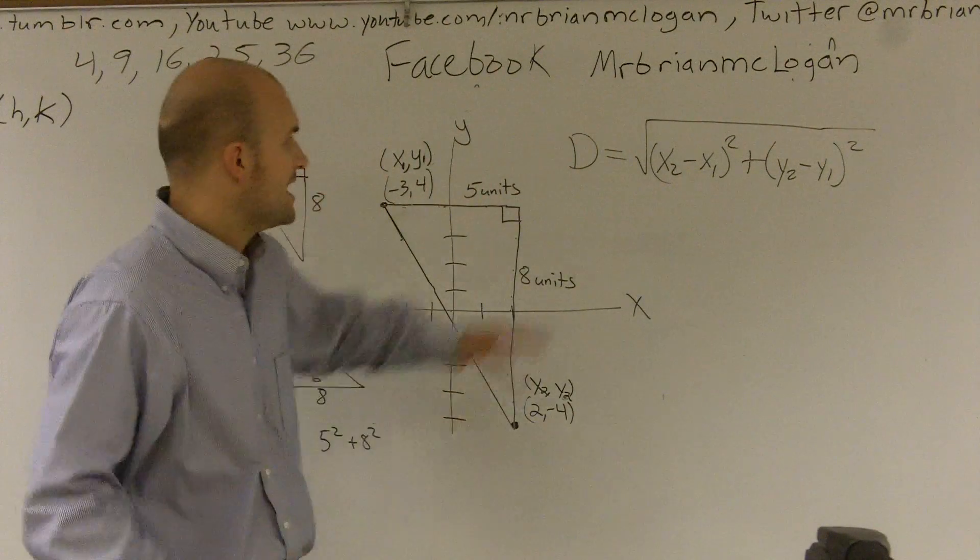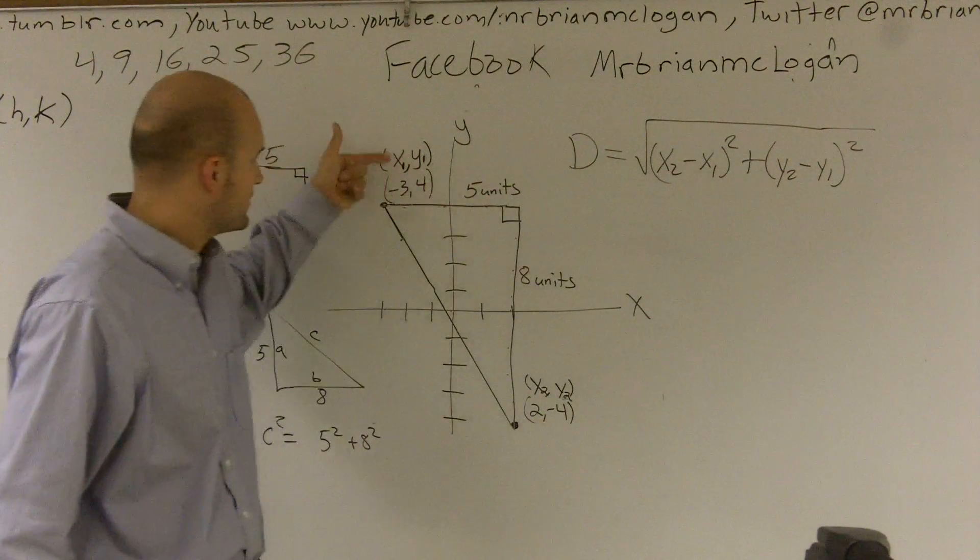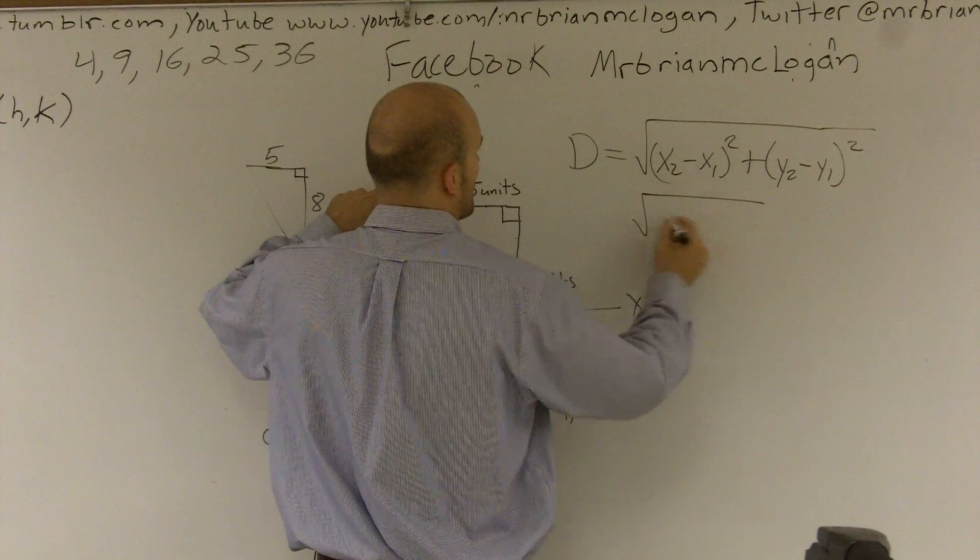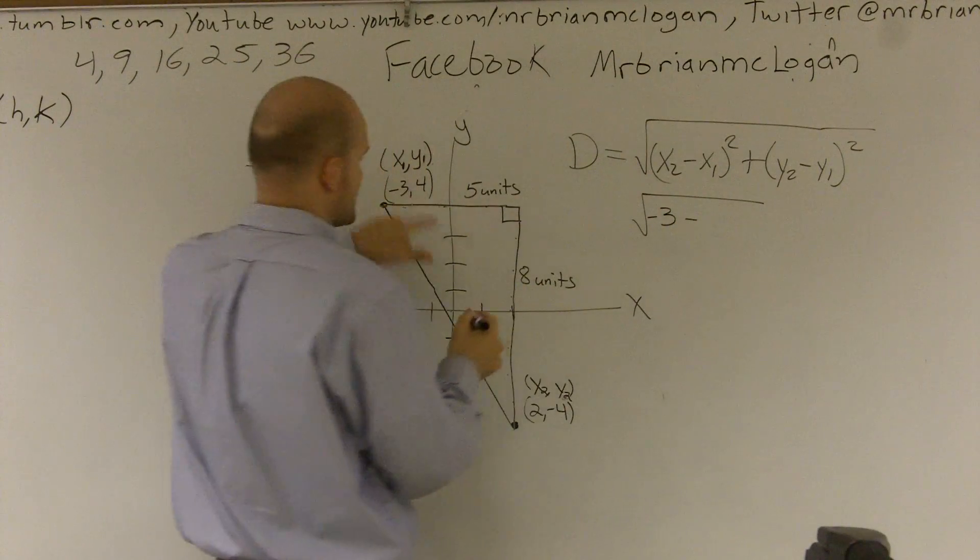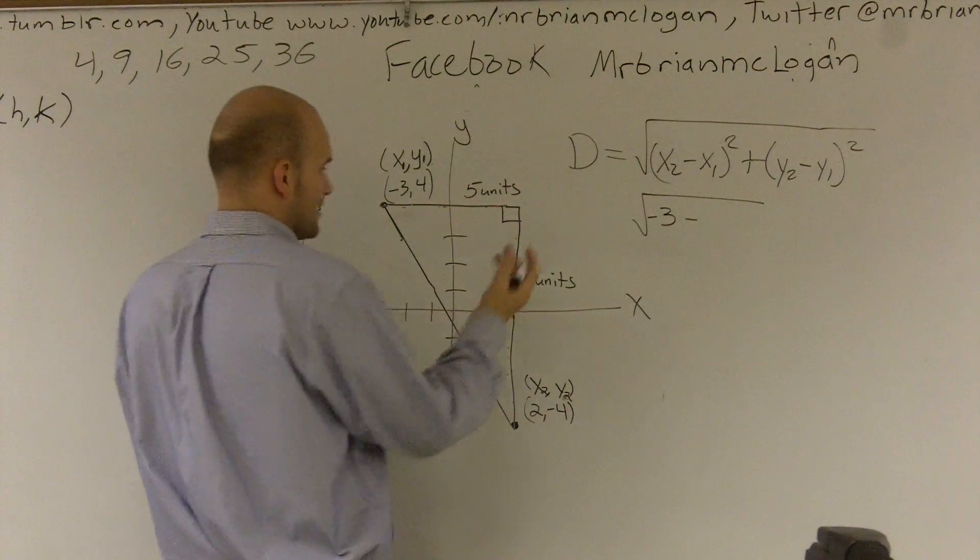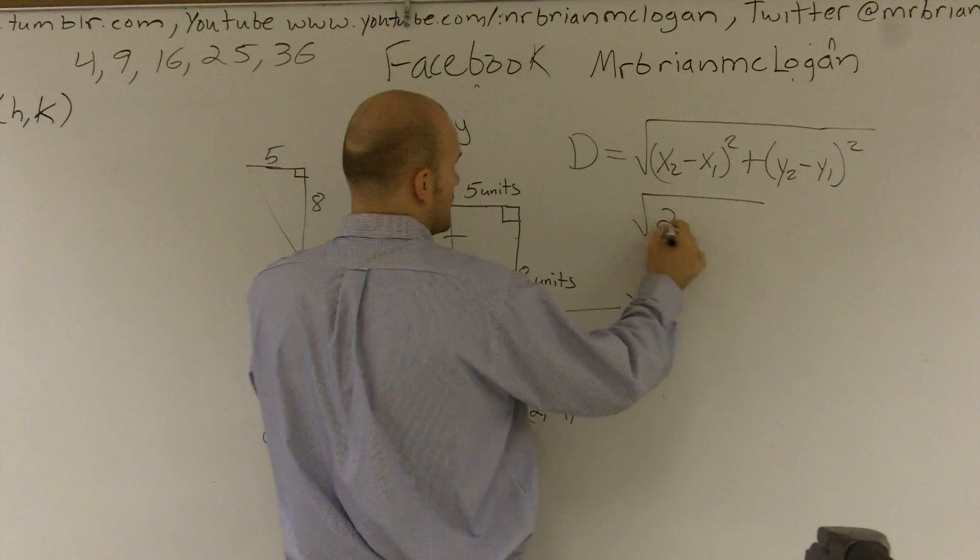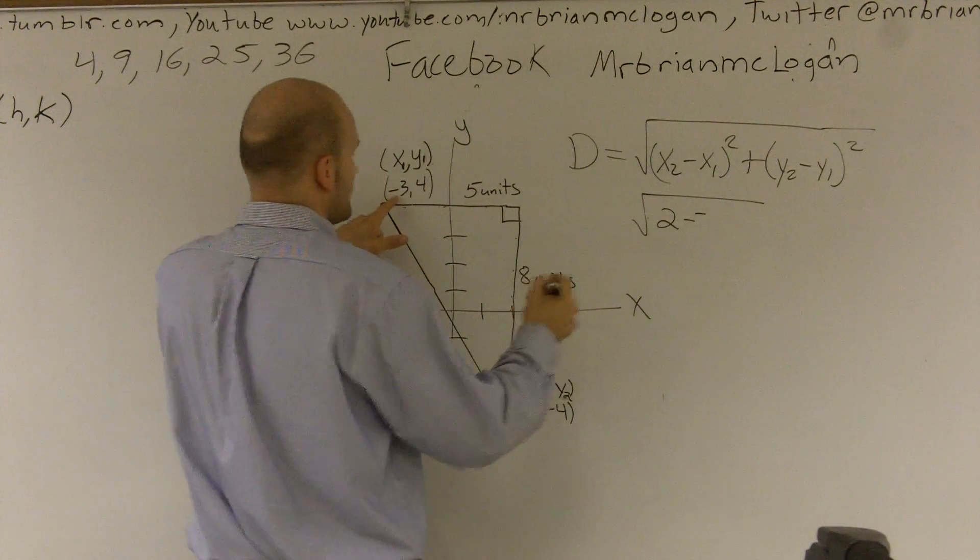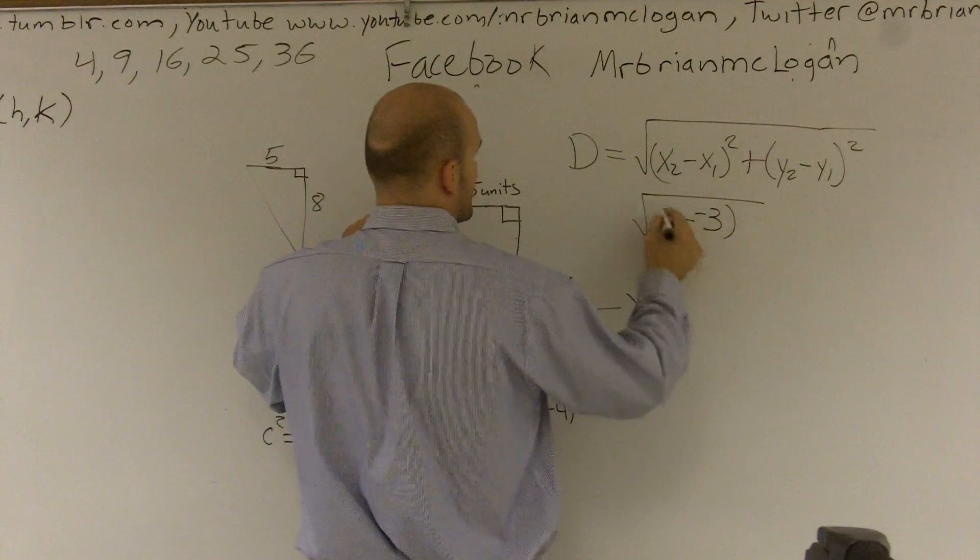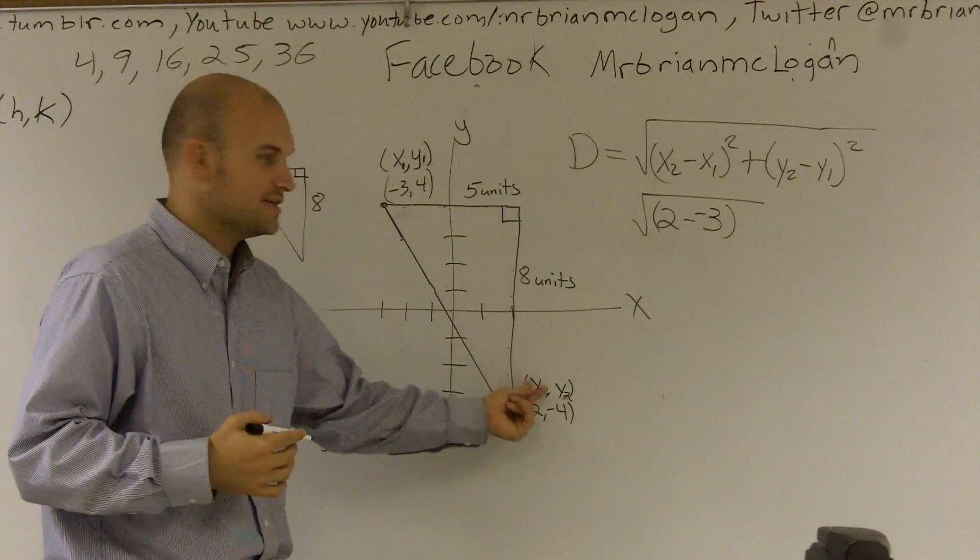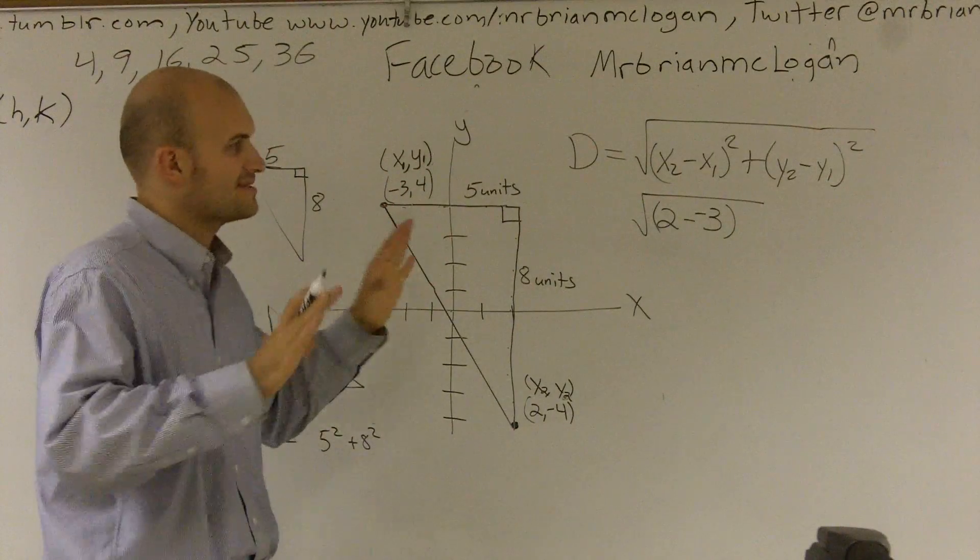So if I was to now plug in my points for these two, I know x1 is negative 3, I'm going to do x2. I said this one is x2. x2 is 2 minus a negative 3, which would be minus a negative 3. And it doesn't matter. Like I said guys, I explained the mistake, but it doesn't matter which one. These could have been x1's, these could be x2's. It does not matter.